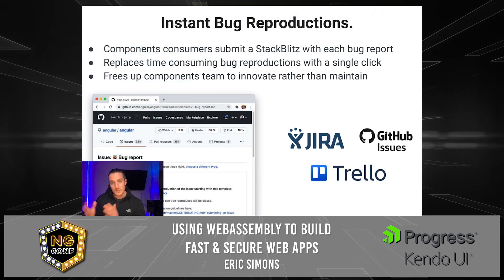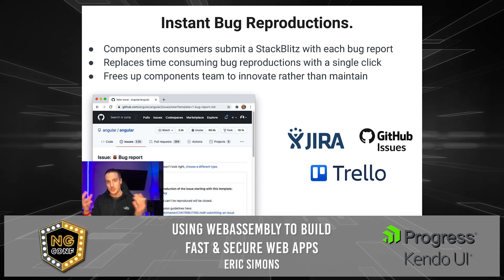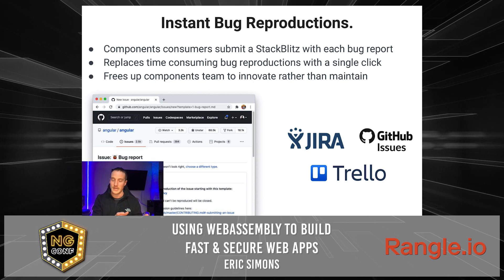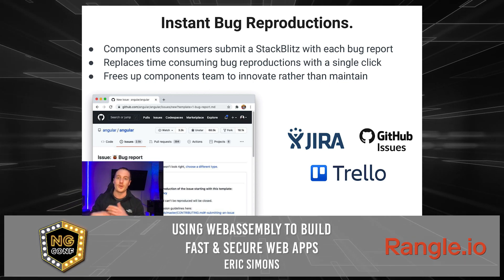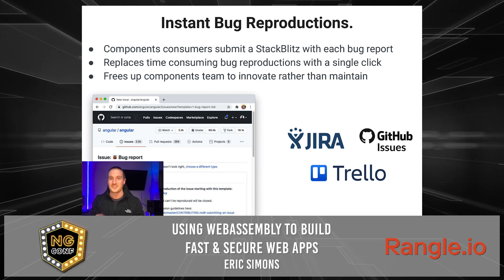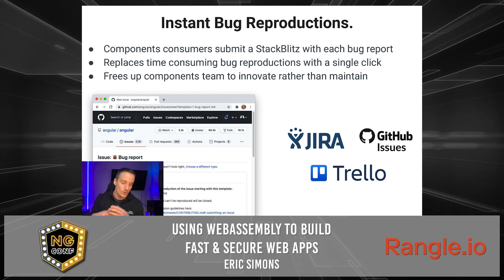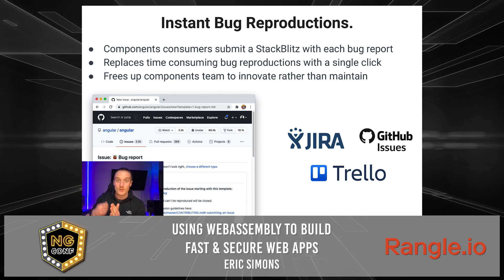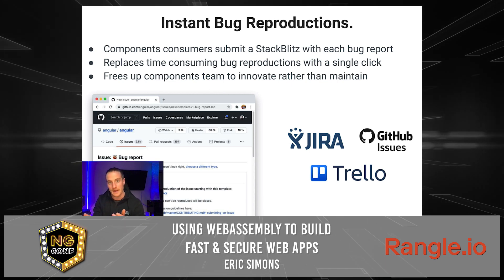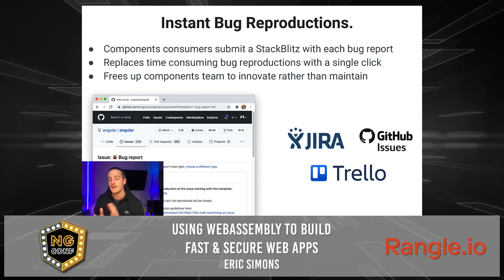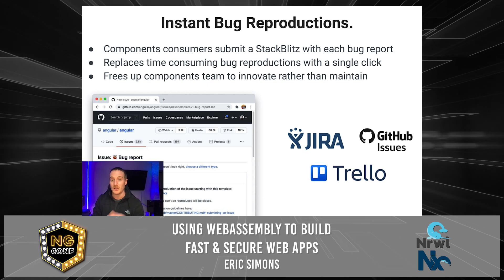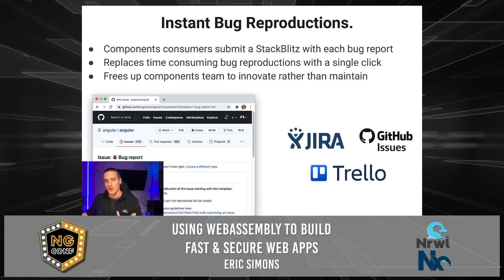A lot of teams, especially in enterprise companies, will have a team of maybe 10 or 20 people working on the design system or library, and they're responsible for it, but they just get overloaded with bug reports. A lot of bugs aren't even bugs — it's just people who are confused. What's nice about requiring a StackBlitz link with every issue filed in Jira or GitHub is that it gives you an instant environment to open it up, see if it's even a bug, and actually debug what is going wrong.